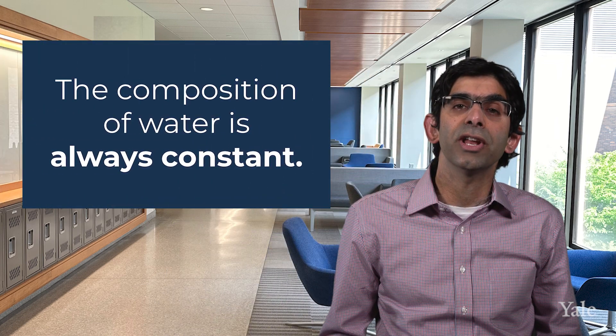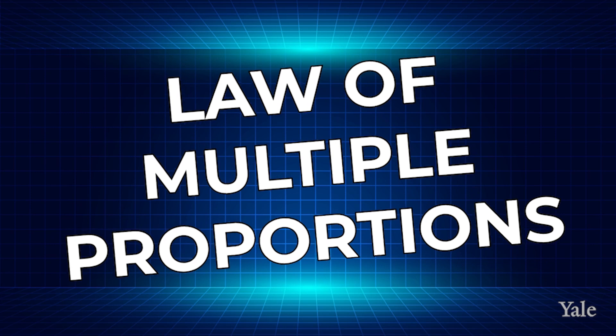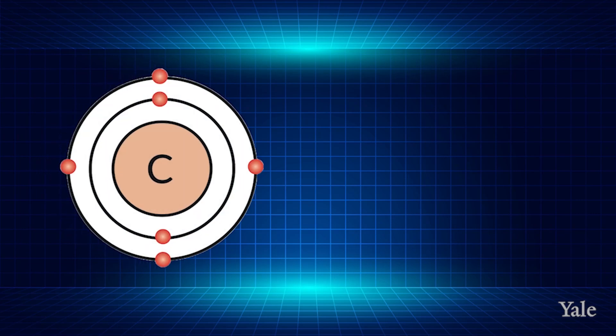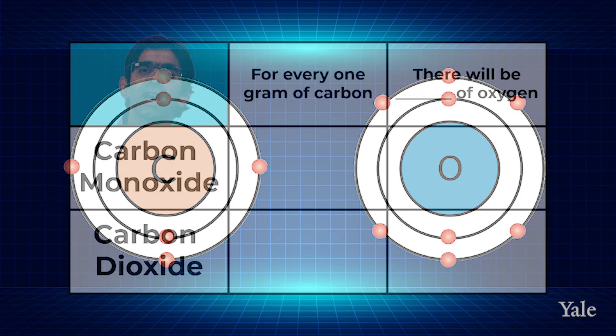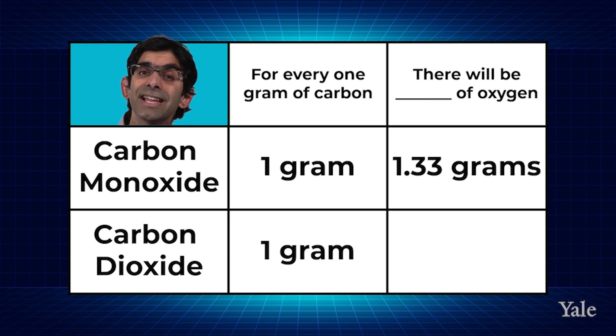This law is important because it suggests that the composition of water is always constant. The work of Boyle, Lavoisier, Proust, and many other scientists not mentioned in this video, set the stage for John Dalton to develop the law of multiple proportions. This applies to series of compounds that consist of only two elements. For instance, let's look at two compounds that only contain carbon and oxygen. In our first compound, carbon monoxide, when there is one gram of carbon, there will be 1.33 grams of oxygen.